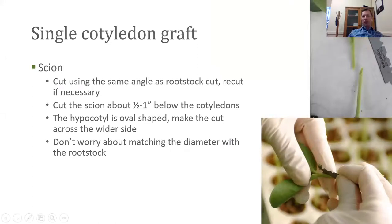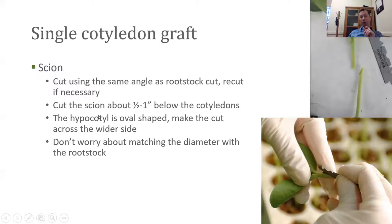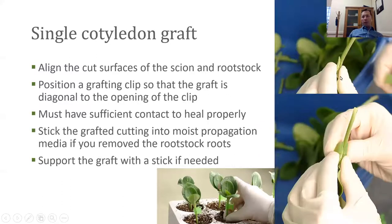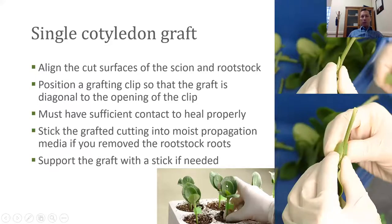For the scion, we're cutting below the cotyledons, making a similarly angled cut — about 45 to 70 degrees. We want to cut the scion about half an inch to an inch below the cotyledons. The hypocotyl or stem of the scion is oval-shaped, so you want to make a cut across the wider section. Don't worry about trying to match up the diameter of the rootstock, because it won't. Then we just align those cut surfaces, place a clip on there to hold them in place, making sure we have good contact between them, with the angled cut visible in the opening of the clip. If we cut the rootstock off its roots, we re-stick it into a new tray and support the graft with a stick if needed.